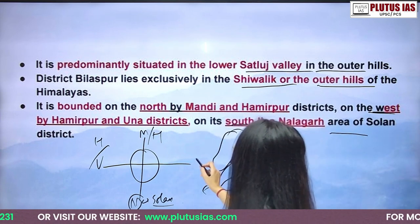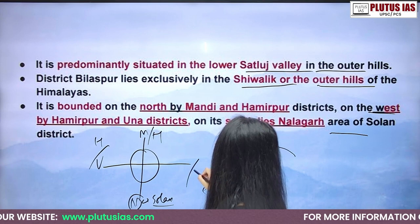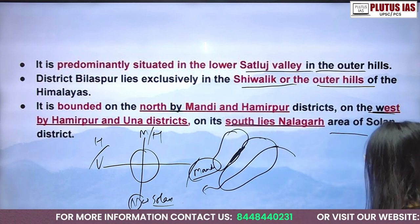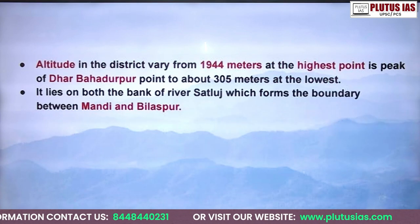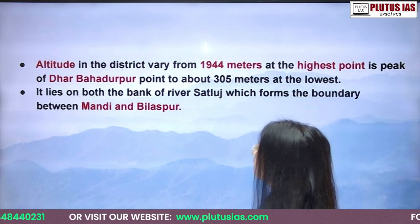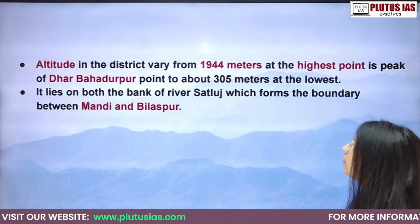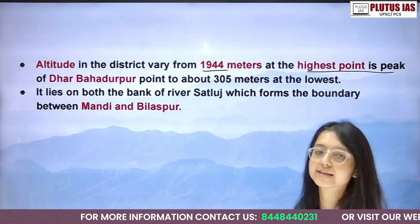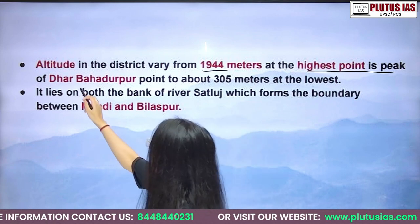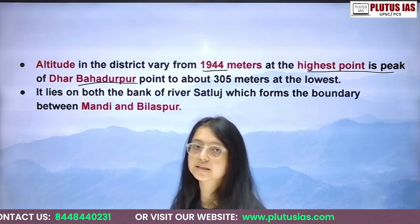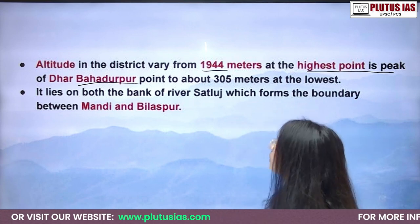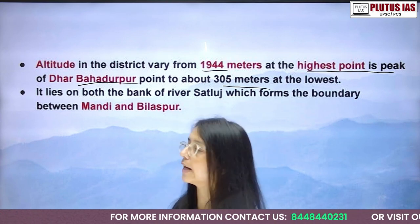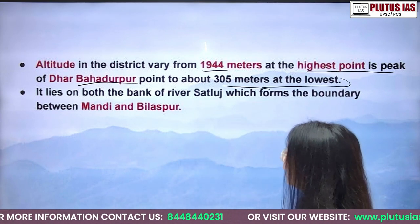To the south it is bounded by Nalagarh in Solan district and also by Mandi. The altitude in Bilaspur varies from 1944 meters at the highest point. The highest peak in Bilaspur is Dhar Bahadurpur, and the lowest point is 305 meters.